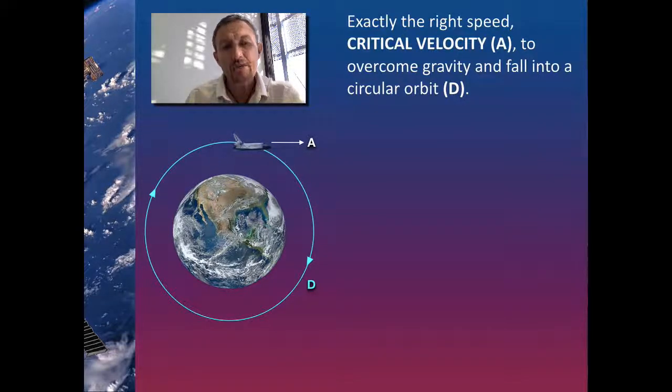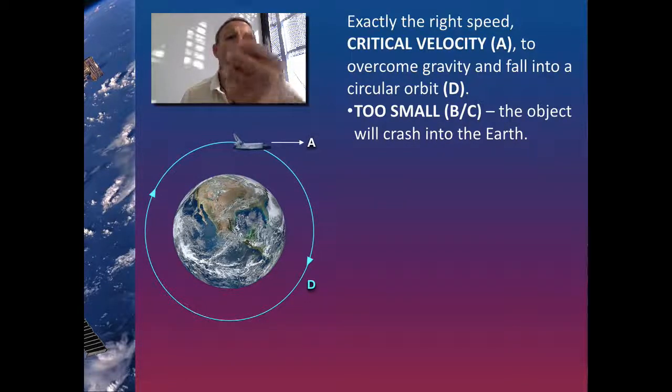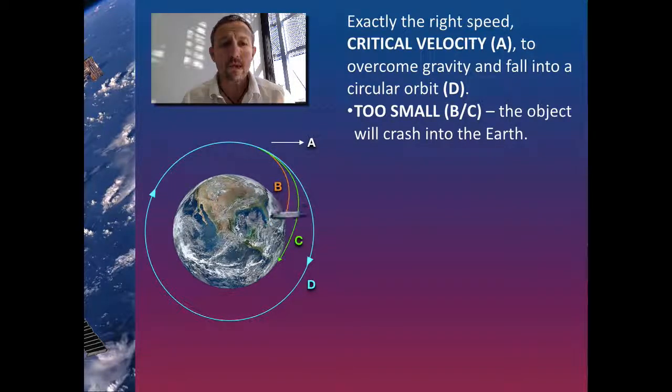But the problem is what happens if it's too small? If we don't give it enough velocity, the result is the force of gravity has the effect of pulling it too much. If it pulls it too much in relation to the curvature of the earth, what will happen is the object will crash into the earth as we would find with B and C.